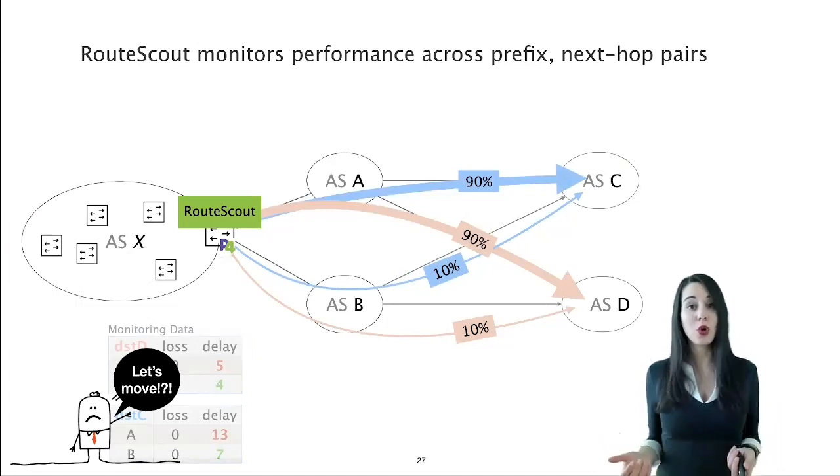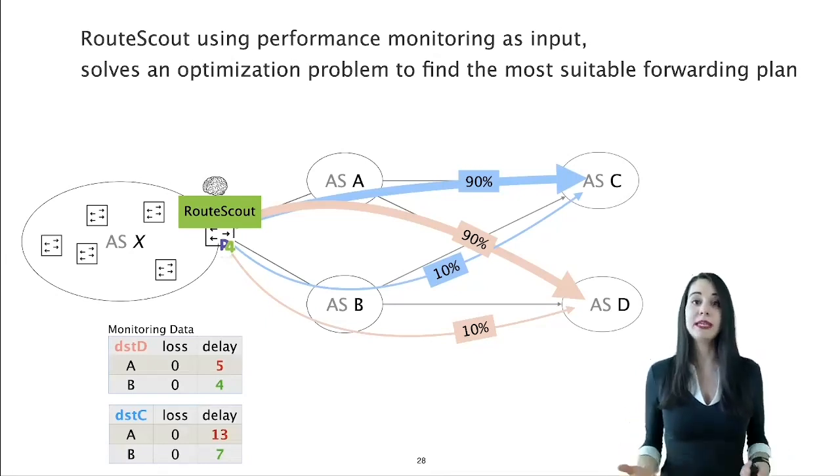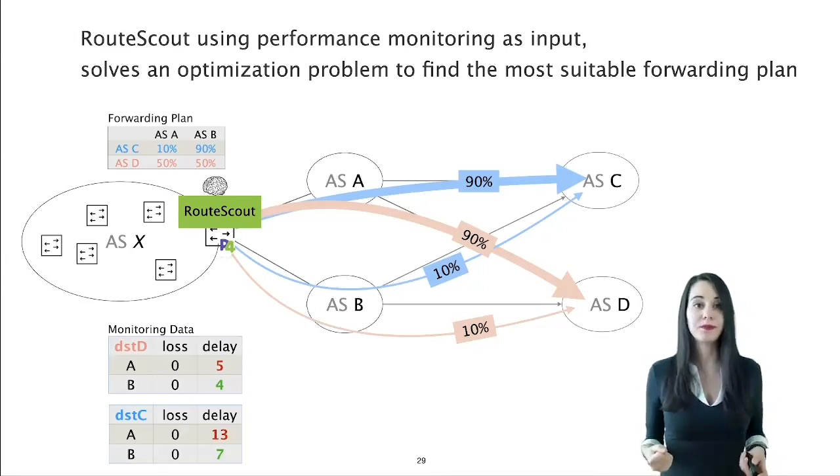As an intuition, the operator might not be happy with shifting traffic from one next hop to the other unless the current performance is unacceptable. To deal with such complex objectives, RouteScout first solves an optimization problem to find the most suitable forwarding plan. The optimization problem gets as input the operator's objective, the delay and loss measurements of the pairs, and the bandwidth of the direct links. For instance, in this example, RouteScout finds that it's best to route 90% of the traffic to ASC via ASB while leaving 10% to monitor the path via ASA. RouteScout also finds that it's best to split the traffic to ASD equally between ASA and ASB, because the operator prefers to load balance traffic as long as the delay gain is less than 30%.